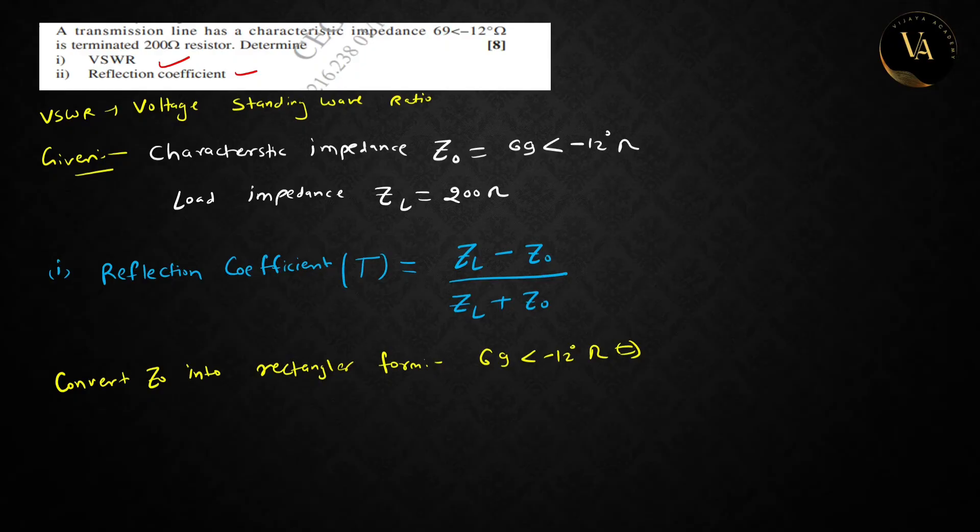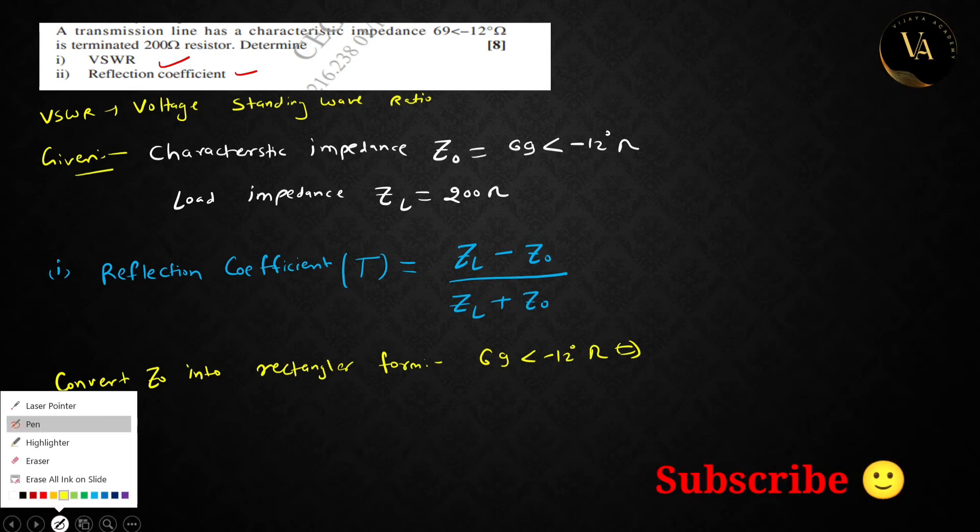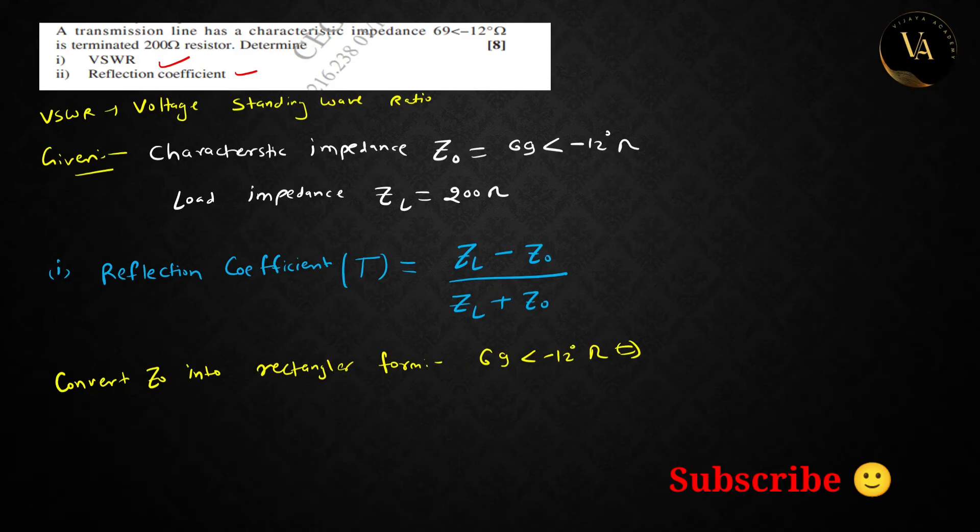Then you will find x value which is 67.49. Next, y value is minus 14.34. Y value is imaginary part. 67.49 is real part, minus 14.34 is imaginary part which we denote as j or i.